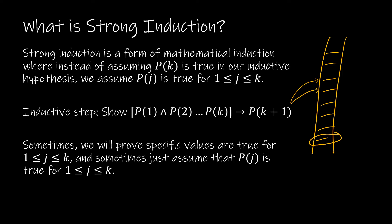So now instead of saying if we can get to k we can get to k plus 1, strong induction says if we can get to all of the values up to k, then we can get to k plus 1. So we're saying we can get to 1, 2, 3, 4, and so on. Our basis step is going to be exactly the same — it's still going to be our least element. But our inductive step is going to either show for specific values up to k that it's true, or just assume that p of j is true for all of the values from 1 to k.